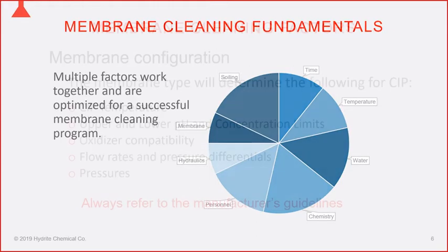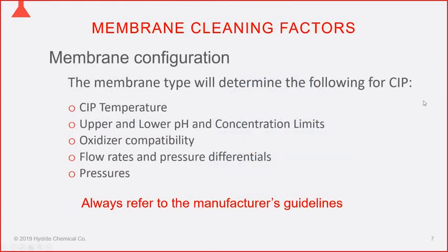Regarding membrane configuration: the type of membrane dictates a lot about how we'll clean the system. Most membranes we encounter are standard membranes that can tolerate 120–125°F CIP temperature, though high-temperature membranes are being used more. Membranes generally have similar upper and lower pH and concentration limits — low pH from membrane suppliers is typically 2.0, sometimes stretched to 1.8, and the upper limits are generally around 11.